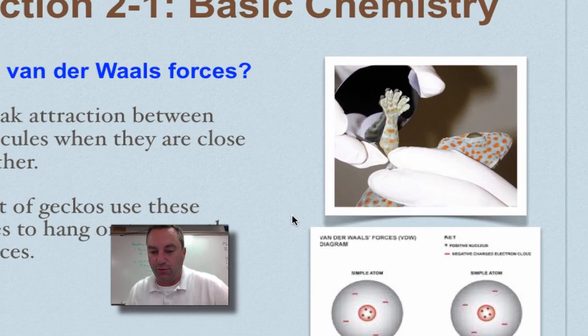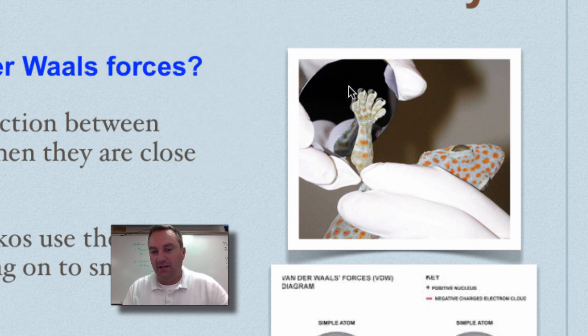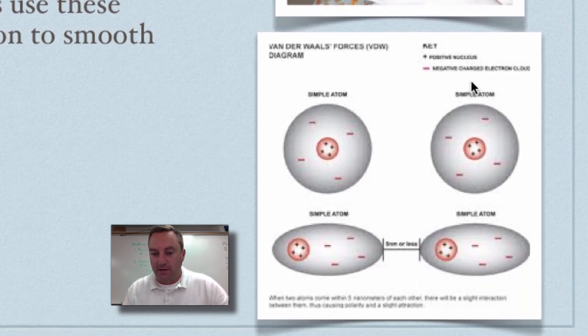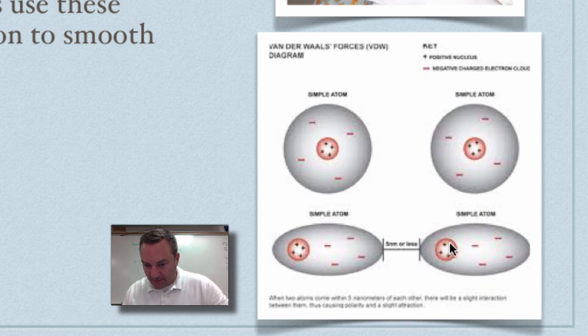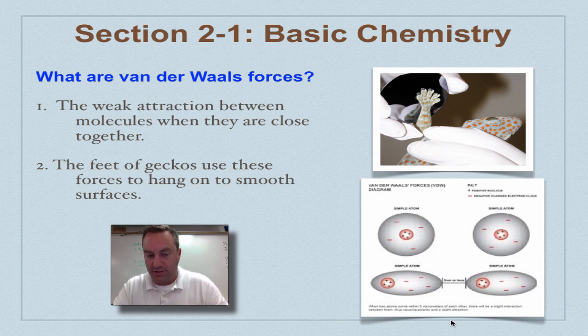To see Van der Waals forces in action, I want you to think of this gecko up here. Geckos are these kind of lizards that can climb up walls because there are Van der Waals forces between its feet. In this case, this is a mirror. Notice that the positive nucleus is attracted to the negative electrons and vice versa. So when you think of stuff like geckos climbing walls, a lot of insects climbing walls, those guys are using Van der Waals forces in action.